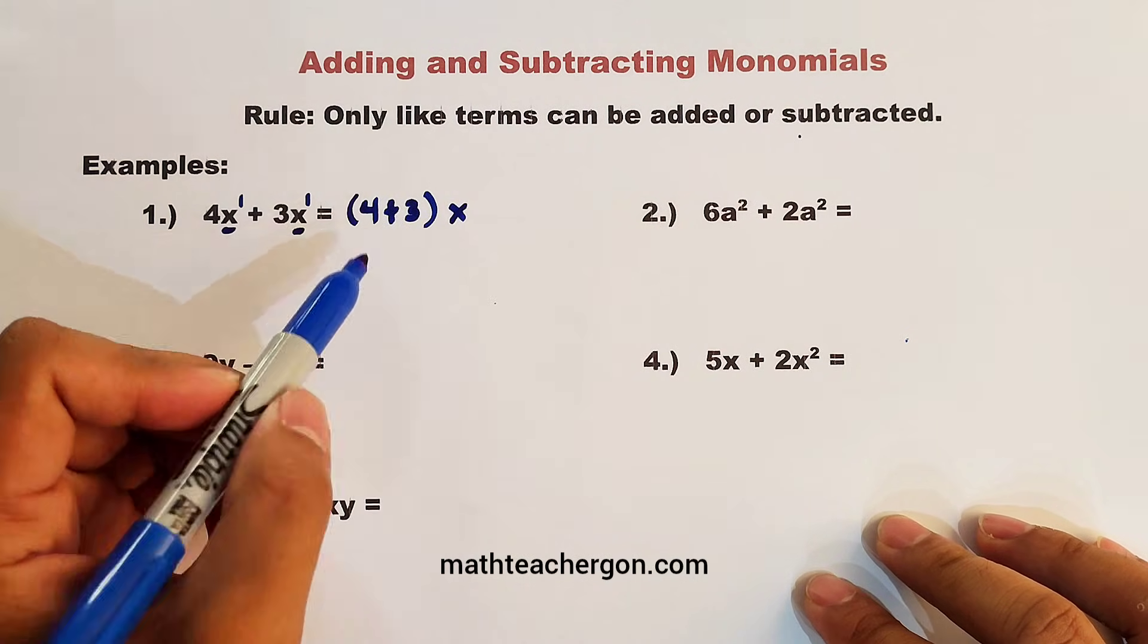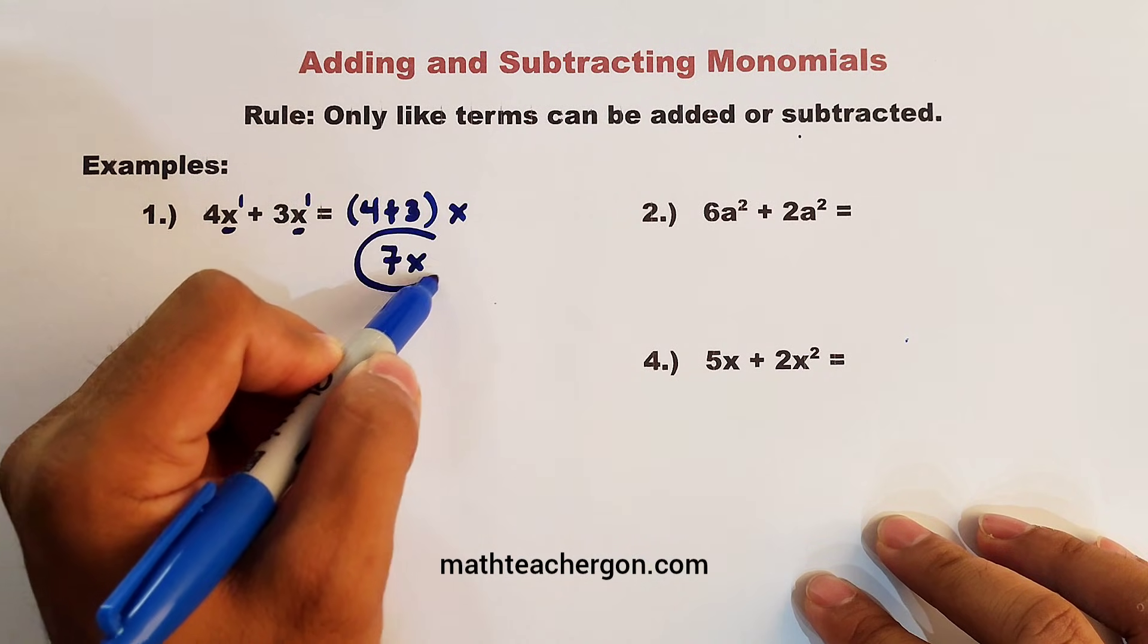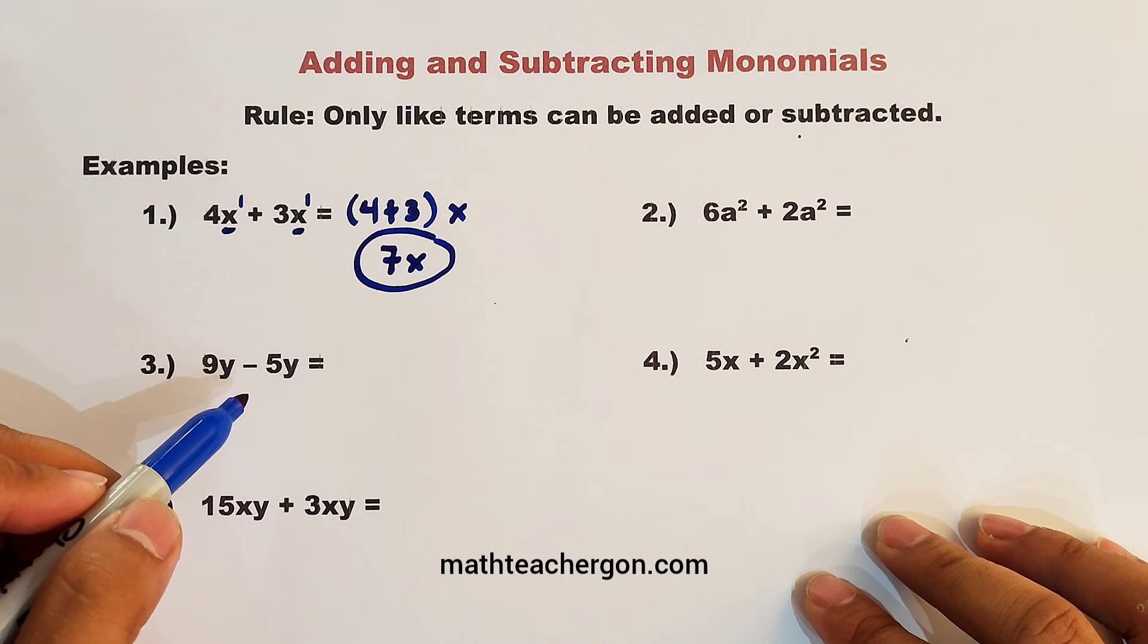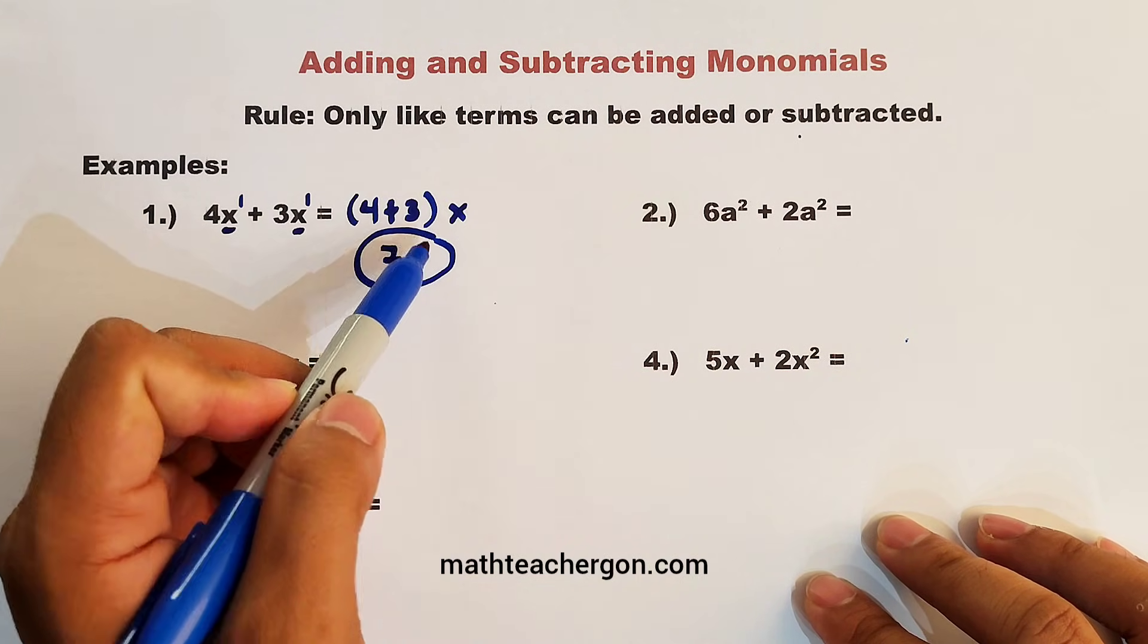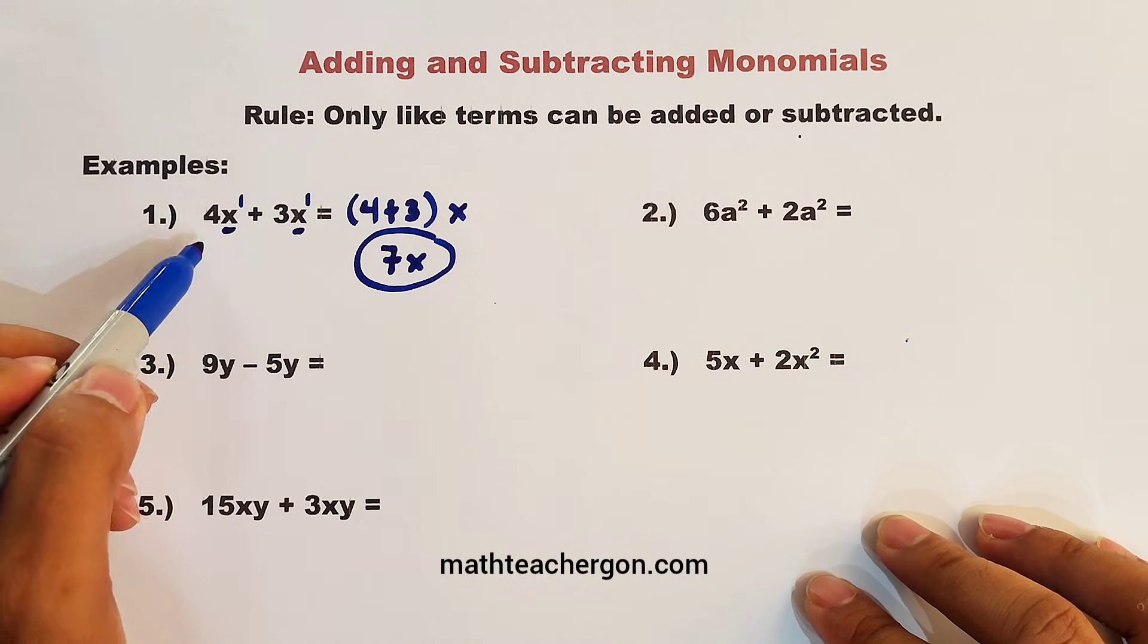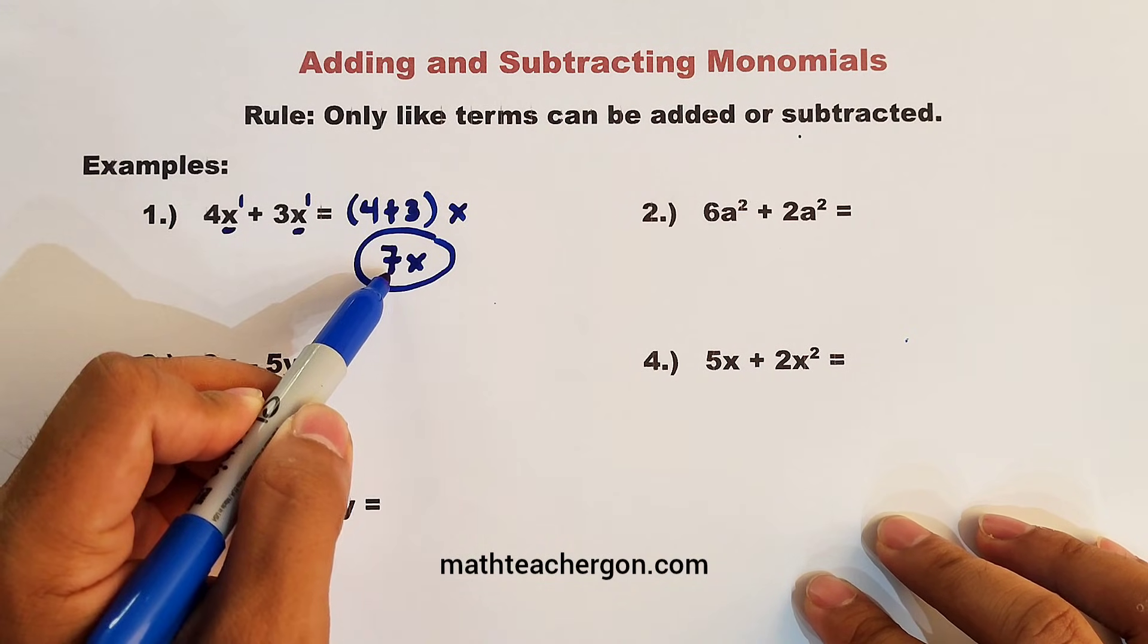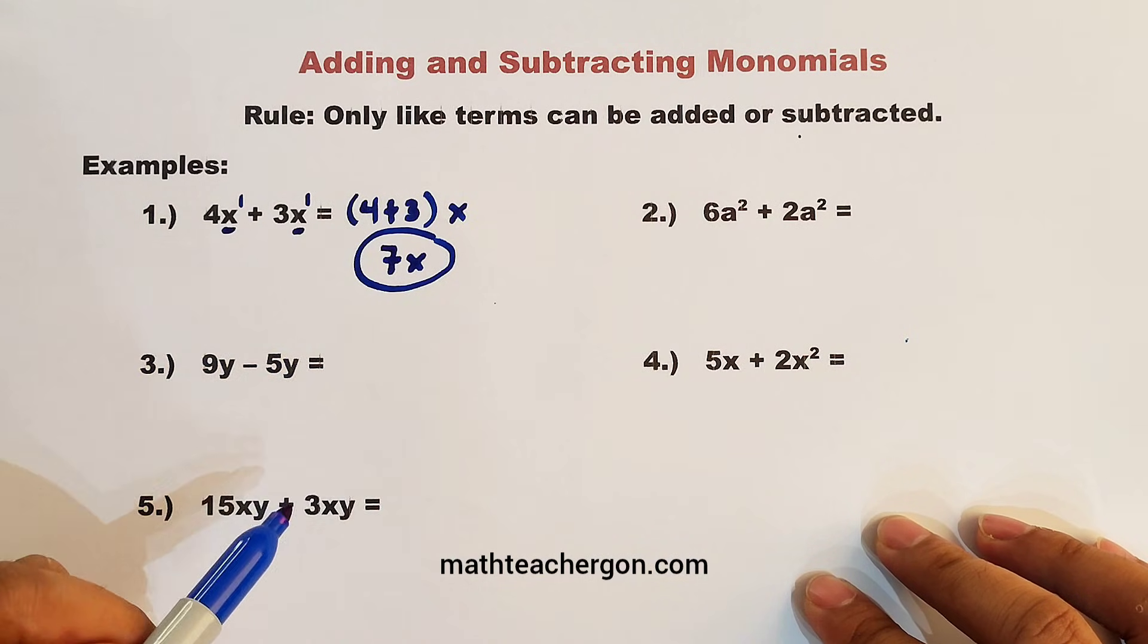And what is 4 plus 3? The answer is 7x. This is the correct answer. So as you can see, what I have done here, I only showed you this kind of step. But we can directly answer this as 7x. 4 plus 3, that is 7. And then copy the same variable, which is x. So that is 7x.